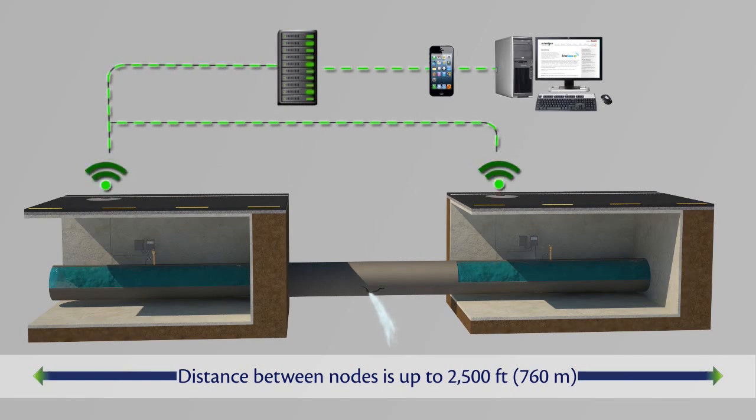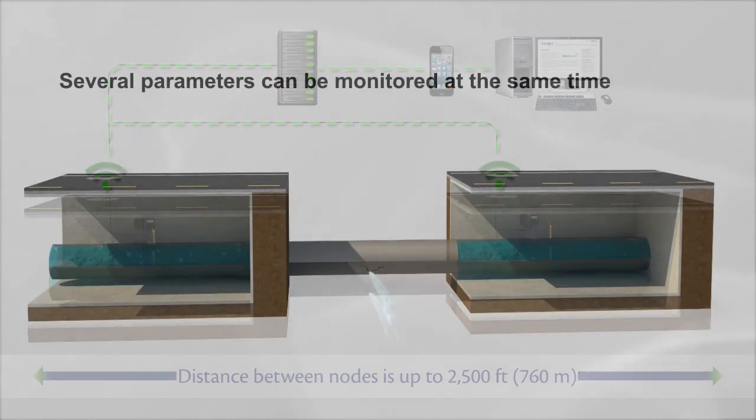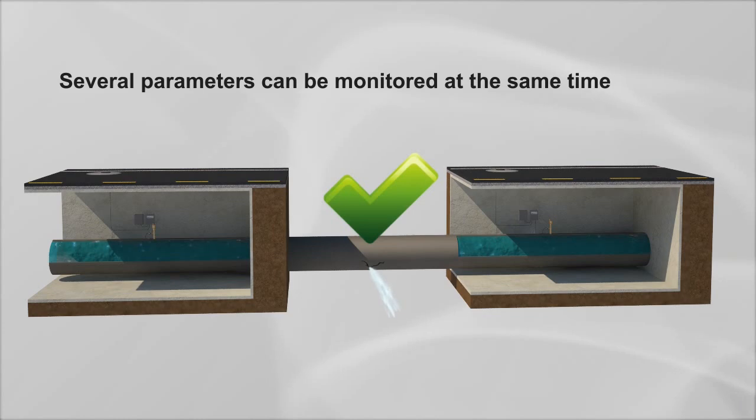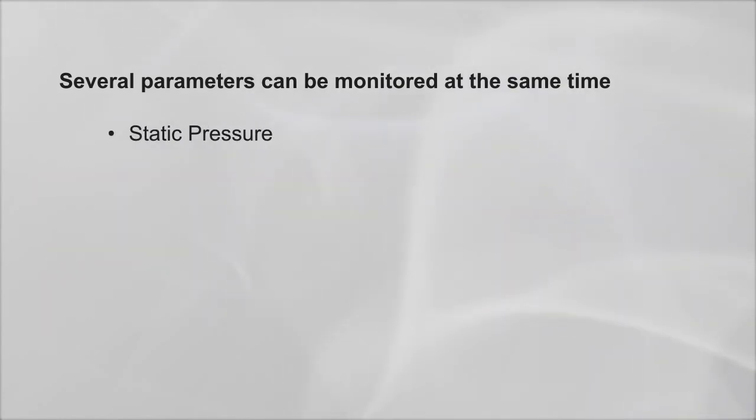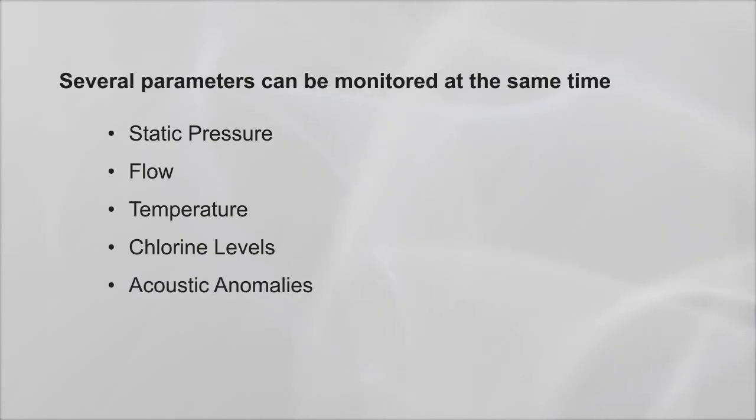In addition to leak detection, the EchoShore platform has a high degree of monitoring flexibility. Several parameters can be monitored at the same time: static pressure, flow, temperature, chlorine levels, acoustic anomalies, and other operator requirements.